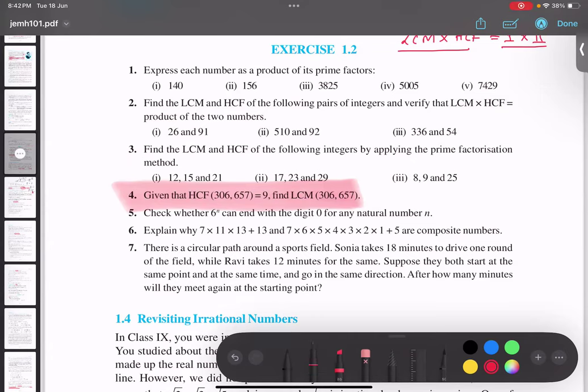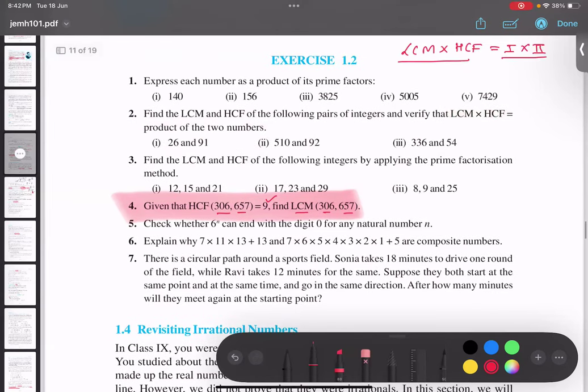Given that HCF of these two numbers is 9, we need to find the LCM of these two numbers. So we will be using this formula: LCM into HCF equals first number into second number.